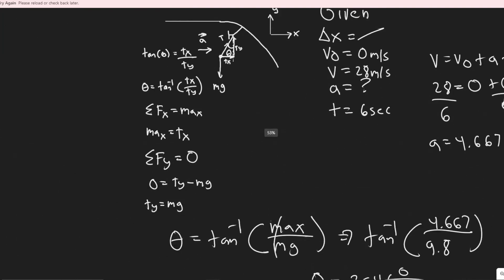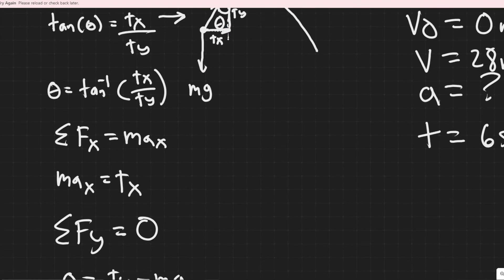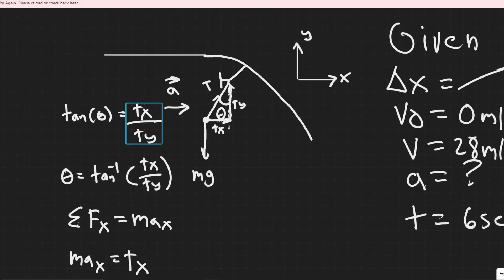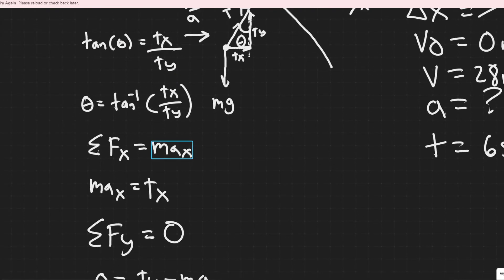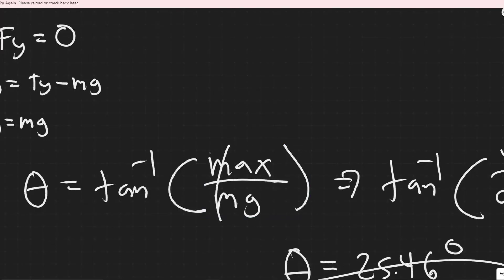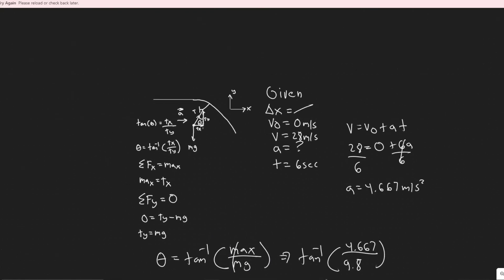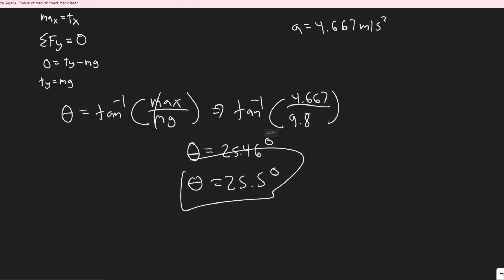To summarize: we first used kinematics to find the car's acceleration, then recognized that theta equals arctangent of t sub x over t sub y. Summing forces in x gave us t sub x, and summing forces in y gave us t sub y. We used those to solve for the angle. That's basically how we did it — using kinematics to define the acceleration, then applying Newton's second law.